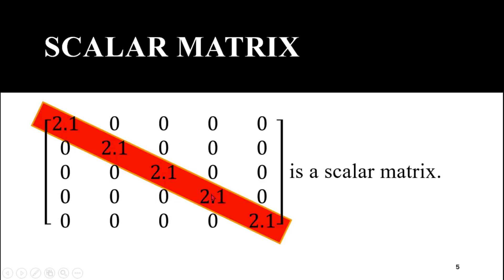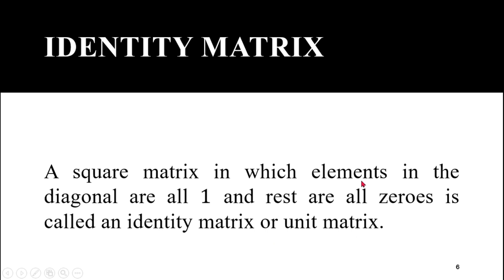This is a square matrix having 5 rows and 5 columns. The highlighted elements are the diagonal elements and all remaining elements are non-diagonal elements. You can observe that all non-diagonal elements are 0, so it is a diagonal matrix. Moreover, all the highlighted diagonal elements are the same and equal to 2.1, so this is also a scalar matrix.